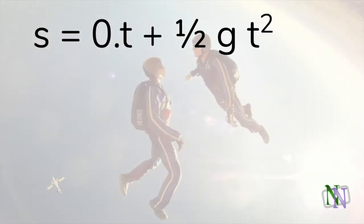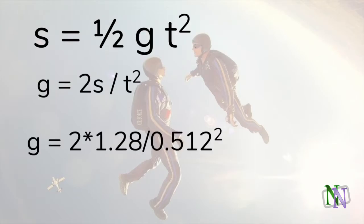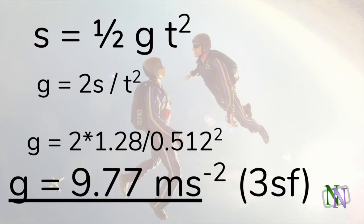The formula relating acceleration due to gravity with time and distance is given here. The initial velocity is zero. Then we can rearrange the formula to find g and substituting the values measured in the experiment. And here we find the result. We state it to three significant figures since the distance and time were measured to this precision.